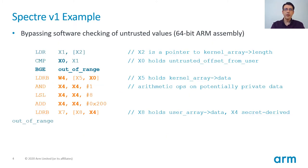Let's start with the Spectre Variant 1 example taken from the ARM speculation side channels whitepaper. This is a code sequence of 64-bit ARM assembly running in a high-privileged mode, for example, an operating system kernel. The input provided by a low-privileged user is held in the X0 register and represents an untrusted offset into a kernel array. If such offset is out of bounds, the algorithm skips the kernel array access with the conditional branch instruction. If the decision on the branch inside the CPU is delayed, for example, because the X1 upper bound hasn't been loaded yet, the CPU may speculatively continue the execution of the subsequent instructions in this sequence.